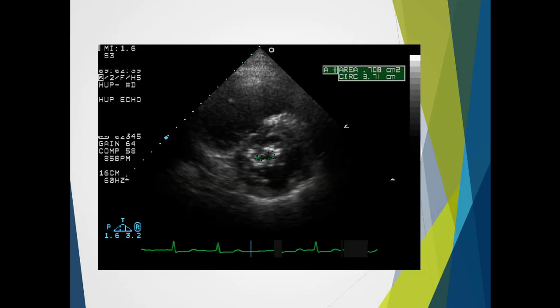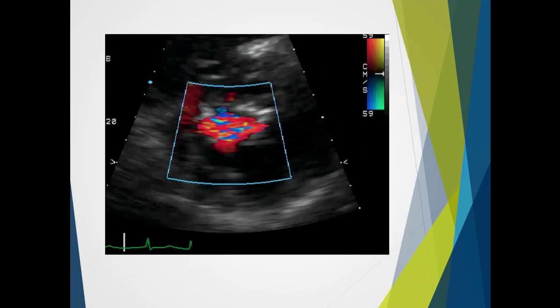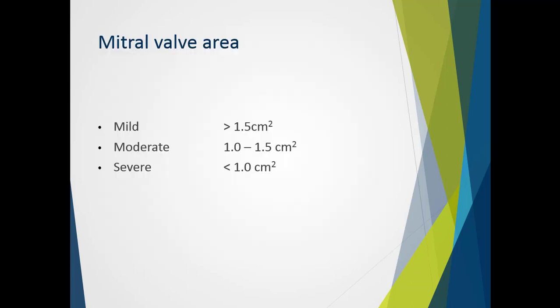And here we have an example of doing planimetry. So basically just tracing around the orifice. And here using color to actually assist us with the trace that we want to make. It's important to note,